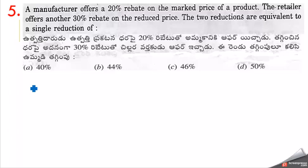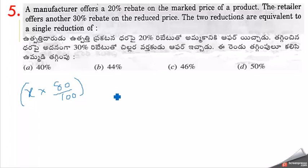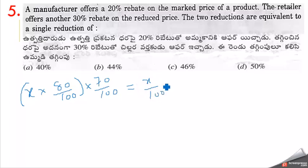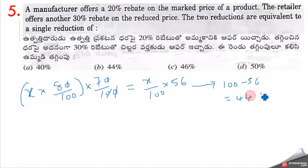The manufacturer gives a 20% discount, so the remaining is 80 by 100. The retailer gives a 30% discount, so the remaining is 70 by 100. Combined: 80 by 100 into 70 by 100 equals 56 by 100. So the total discount is 100 minus 56 equals 44% discount.